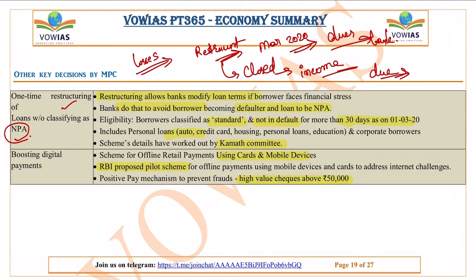Businesses that went into loss due to COVID will get their loans restructured. Restructuring means either loan terms will be varied or additional money will be provided to revive the business. Banks will receive extra capital and extra time so that loans do not turn into NPAs. An NPA is a loan where both principal and interest remain unpaid for 90 days.